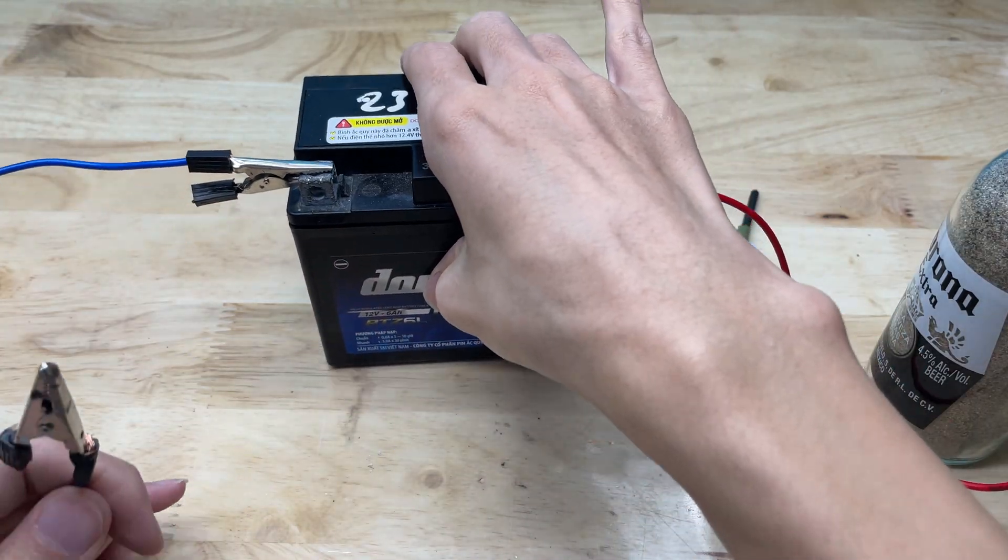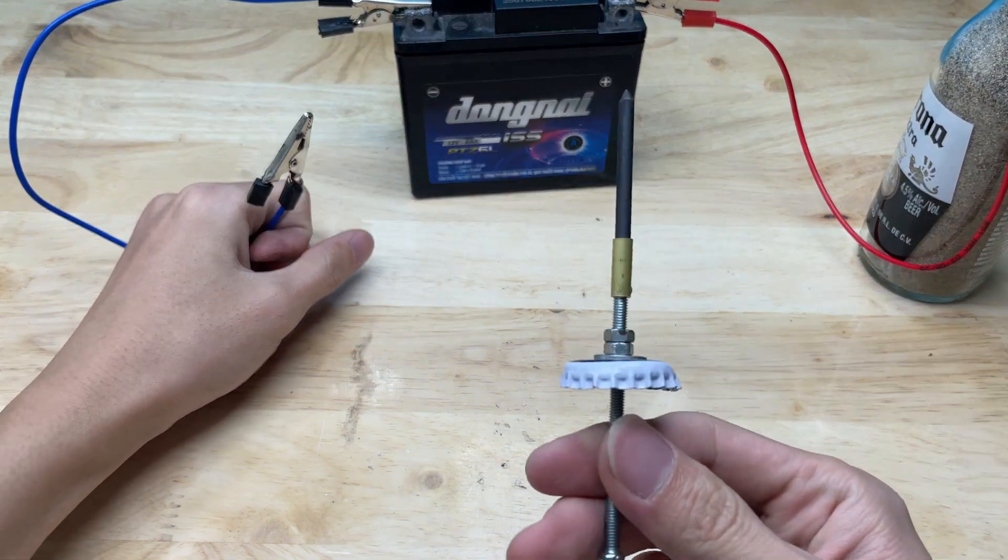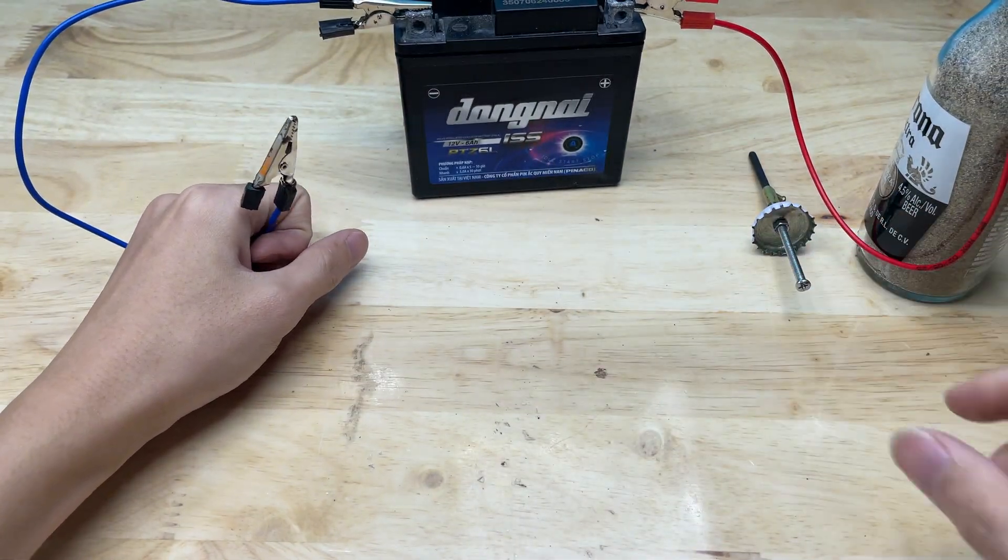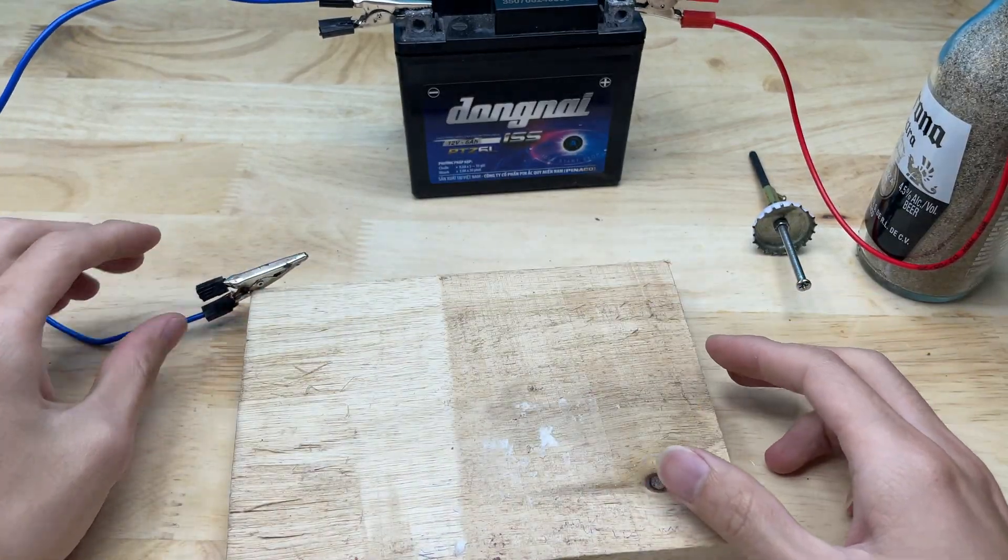Now it's time to put our DIY soldering tool to the test. I'll begin by trying to solder onto this razor blade, which is thin and metallic, making it a good challenge for the tool.